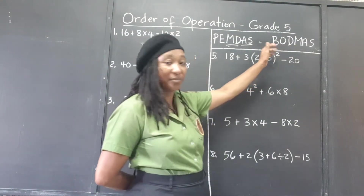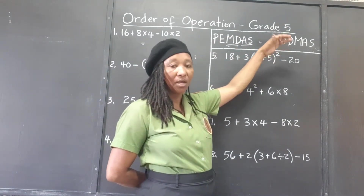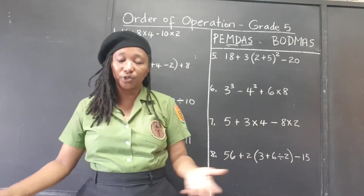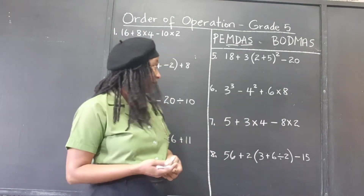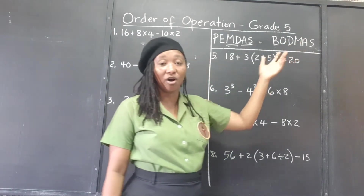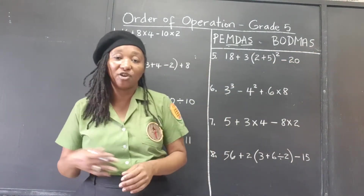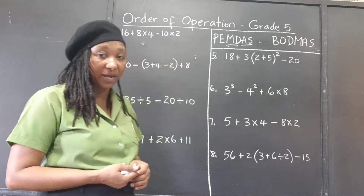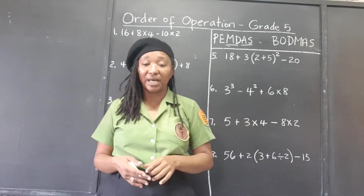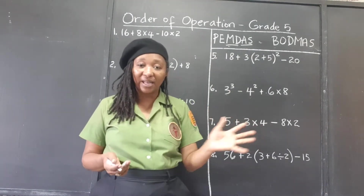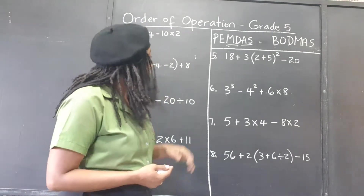PEMDAS and BODMAS are saying the same thing — just that instead of parentheses, BODMAS uses brackets. The O in BODMAS you could use as 'OF,' which means you are multiplying. Then divide and multiply in the order that they come, and finally we work the addition and subtraction in the order they are given in the problem. It's not that you have to multiply before you divide — work them in the order they appear.